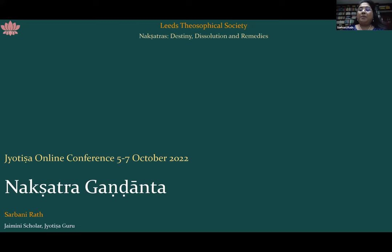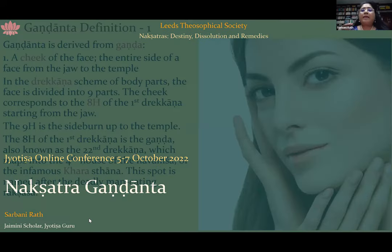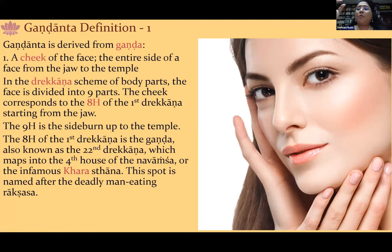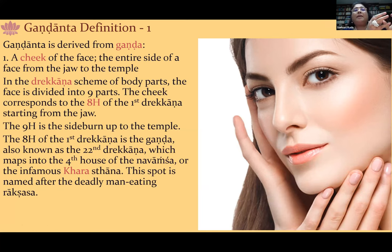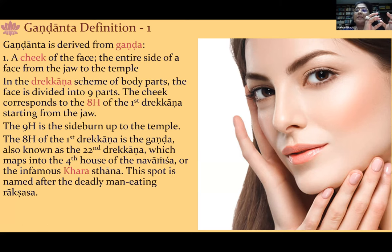Our topic today is Nakshatra Gandanta. We will start by identifying the different definitions and meanings of the word Gandanta. The ancient seers and rishis — from Vashishtha, Shaunaka, and Parashara — have said that Gandanta exists not only between nakshatras, but also between tithis, rashis, and bhavas. We are largely going to discuss the various issues of Gandanta and sandhis, the junctures which nakshatras have with each other.